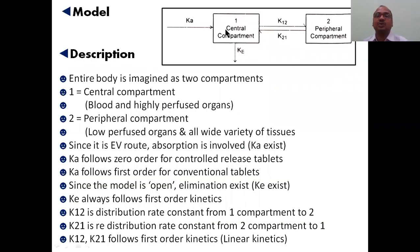Here our body we are imagining as two compartments. First compartment is central compartment, number two is the peripheral compartment. Central compartment always consists of blood and highly perfused organs. Here it consists of low perfusion organs as well as wide variety of tissues.